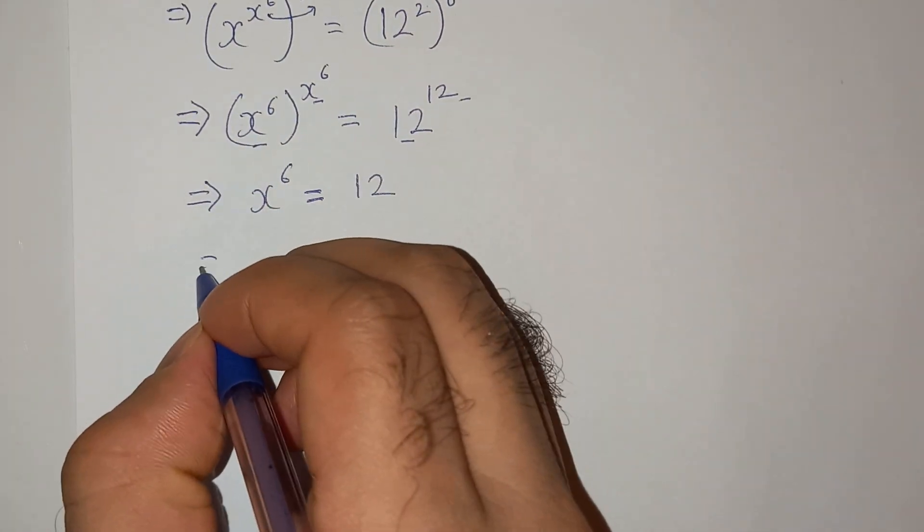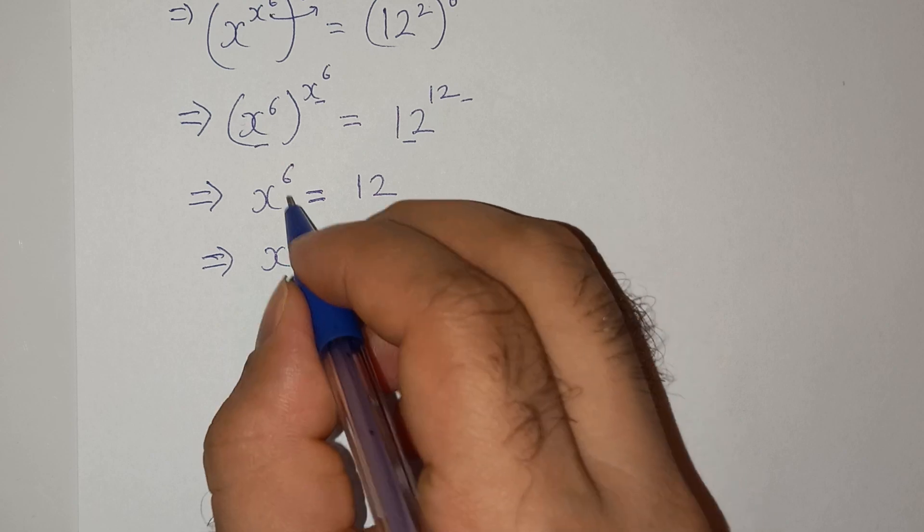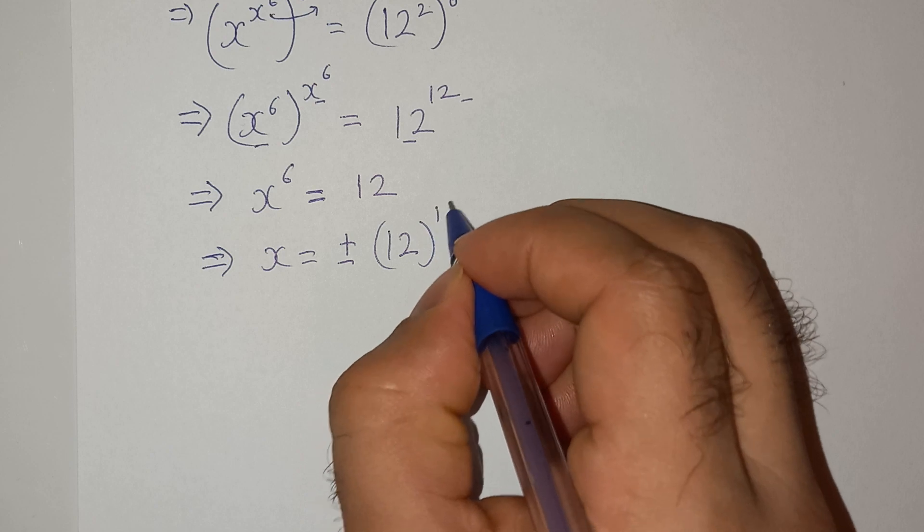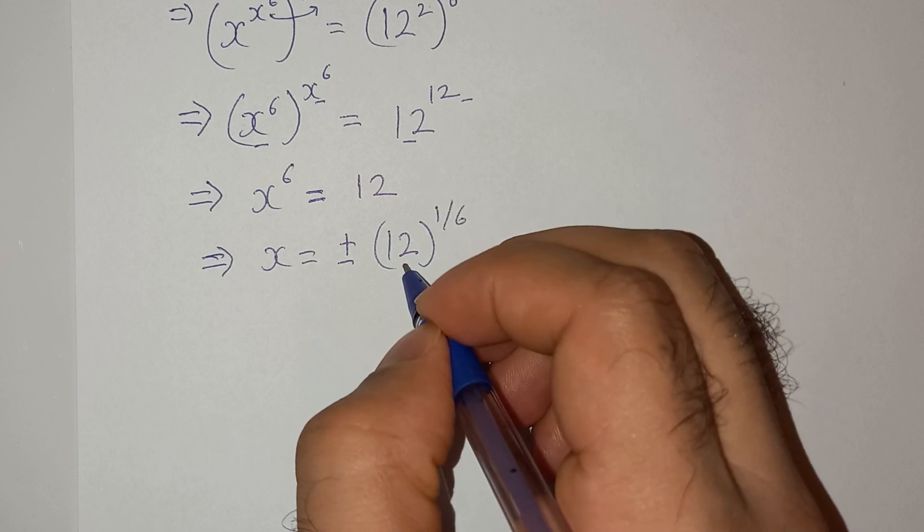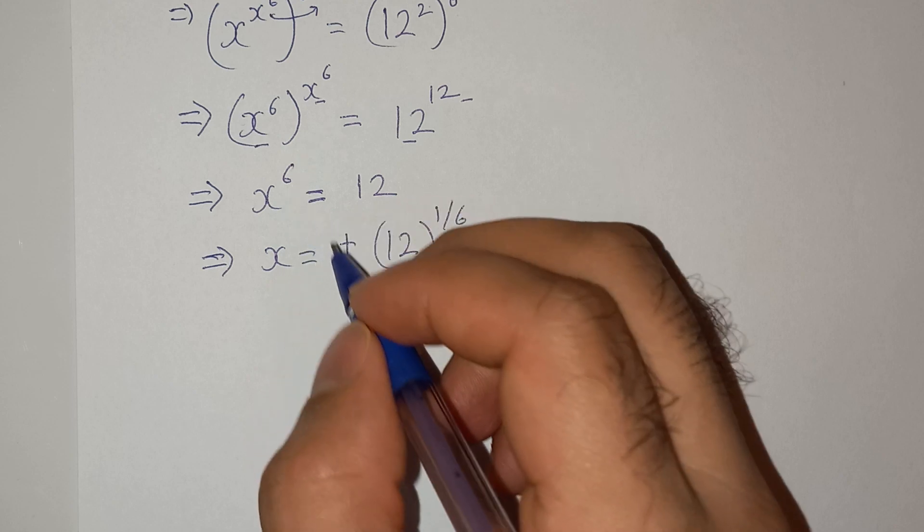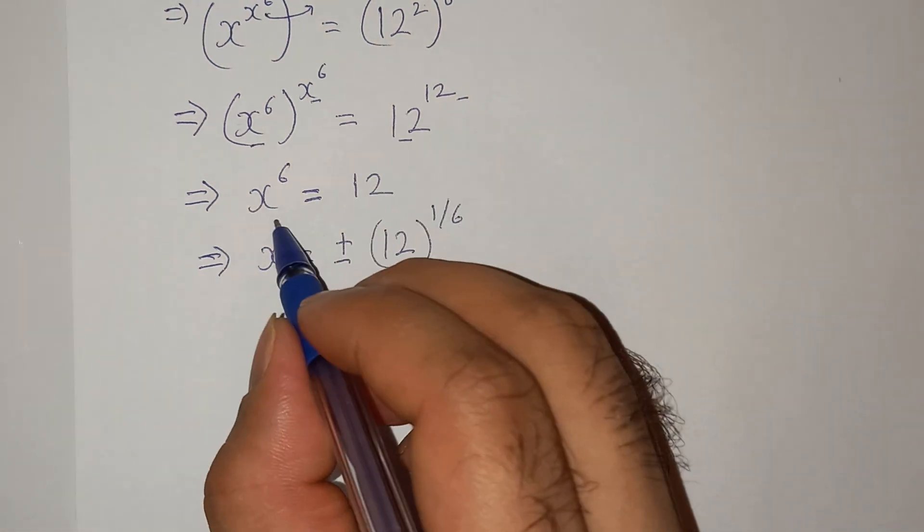So this means the value of x is ±12^(1/6), that is the sixth root of 12. And I have applied plus-minus because this is the sixth root which is an even number. Now this is the final answer.